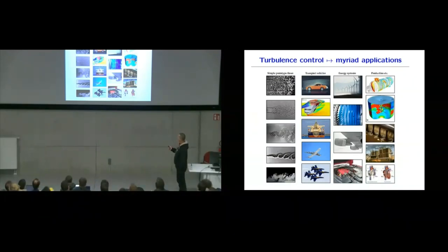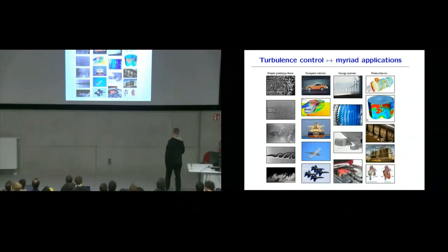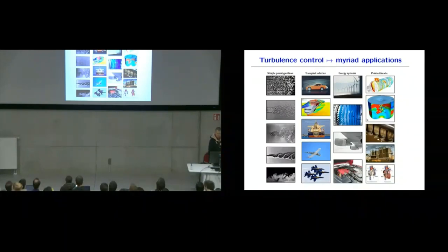And none of the customers would invest this for these savings. Now there are a myriad of other applications. You have seen these examples already in Steve's talk. You can go from simple academic configurations to more practical ones. Trains, cars, wind turbines, engines, and so on. So there are myriad of possibilities of doing turbulence control and doing closed loop control.